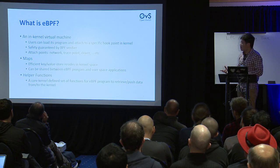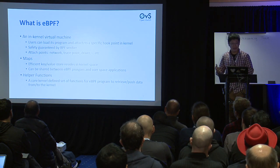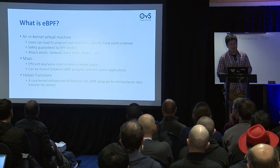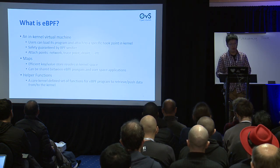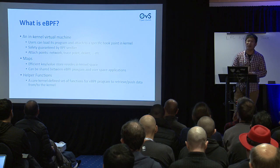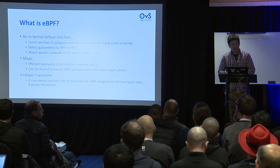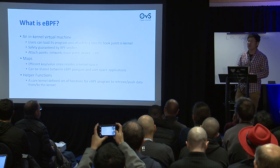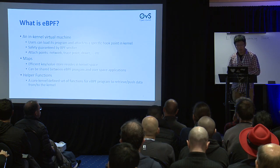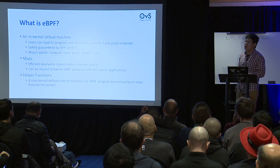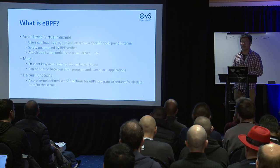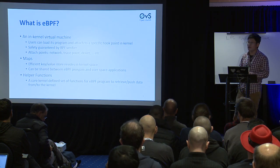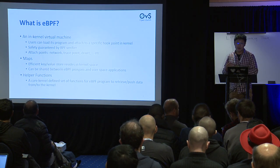eBPF is an in-kernel virtual machine that allows users to run a C program attached to a hook point. Your program is triggered when that event happens. It's guaranteed to be safe by the BPF verifier — it won't crash the kernel and is guaranteed to terminate. It has maps which allow communication between different eBPF programs and user space programs, and helper functions to push or retrieve data from the kernel.